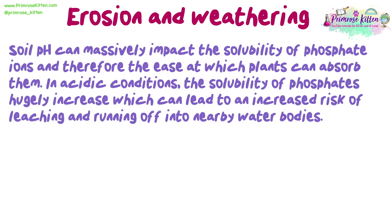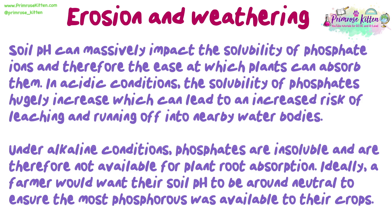Soil pH can massively impact the solubility of phosphate ions and therefore the ease at which plants can absorb them. In acidic conditions, the solubility of phosphates hugely increases, which can lead to an increased risk of leaching and running off into nearby water bodies. Under alkaline conditions, phosphates are insoluble and therefore not available for plant root absorption. Ideally, a farmer would want their soil pH to be around neutral to ensure the most phosphorus was available to their crops.